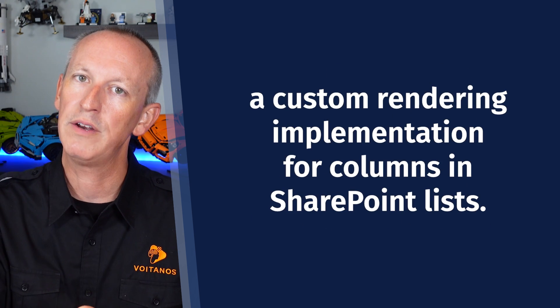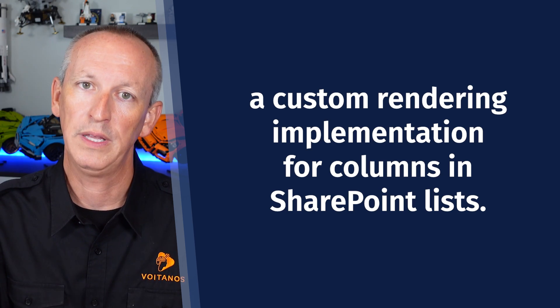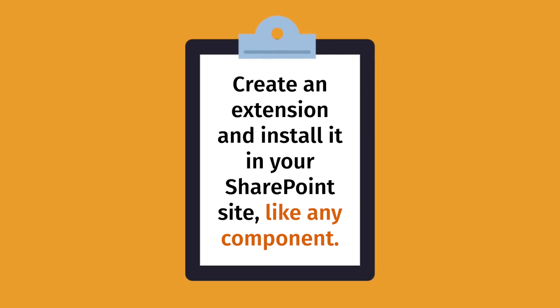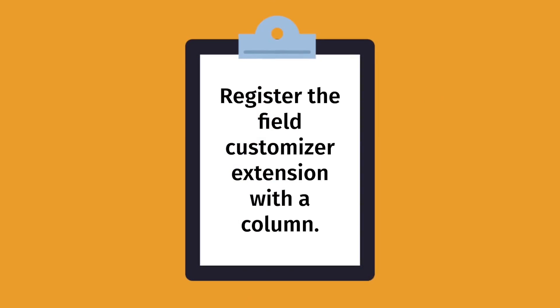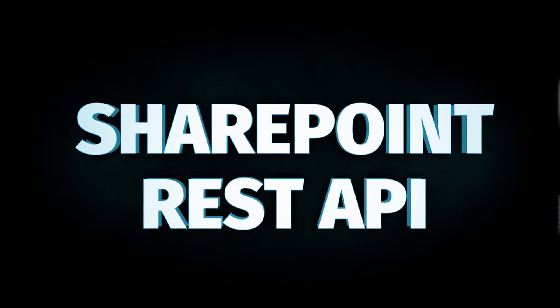Before we get started, let's define the problem before we look at the solution. The SharePoint Framework field customizer extension lets developers create a custom rendering implementation for columns in SharePoint lists. Like all extensions, there are two parts to getting this working: first, you create an extension and install it in your SharePoint site. Then you have to register the field customizer extension with a column. Many developers think this only happens at install time because the default project includes a feature schema XML to create a new site column. But this doesn't help if you want to register the customizer with an existing column. Thankfully, you can use the SharePoint REST API to do this.